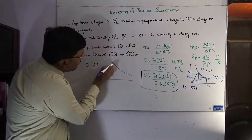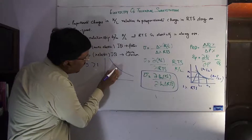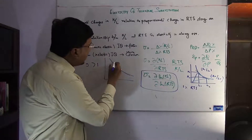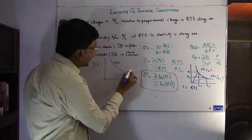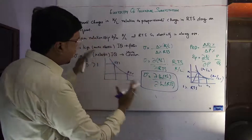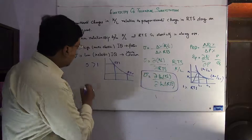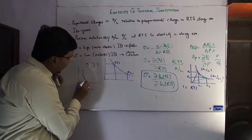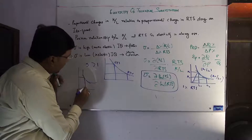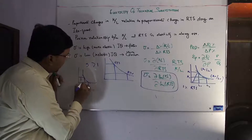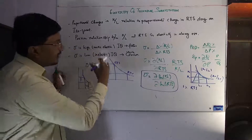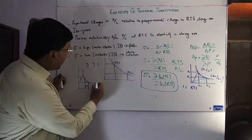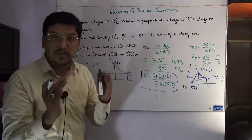With a flatter isoquant, a roughly 1% change in RTS leads to a significant change in the capital-labor ratio. If the isoquant is more convex, the changes in the capital-labor ratio will be smaller. So the flatter the isoquant, the higher the elasticity of technical substitution; the more convex the isoquant, the less elastic it will be.